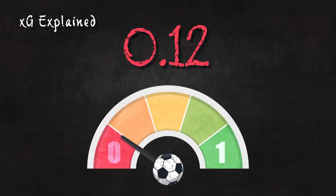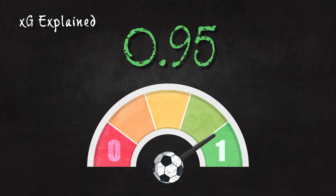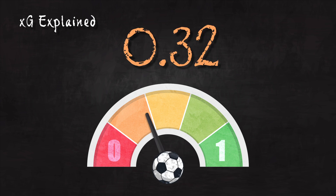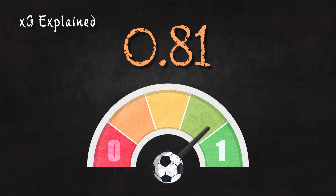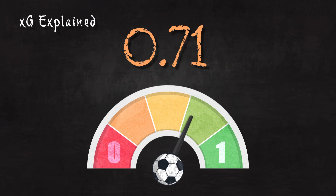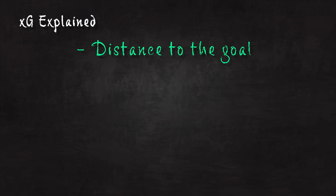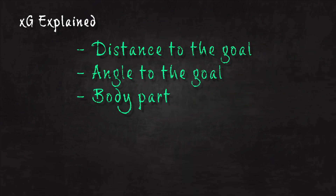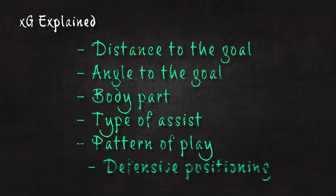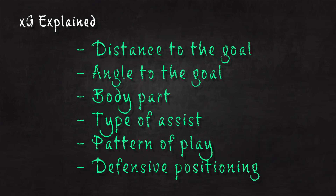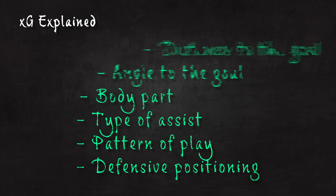But what are the factors that determine a shot's XG value? What makes for a high or low goal-scoring opportunity? Well, there are quite a few — such as distance to the goal, angle to the goal, body part the shot is taken with, the type of assist, the pattern of play, and defensive positioning. There are loads, and you can get more details in the article linked in the description below.